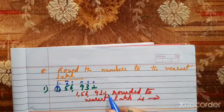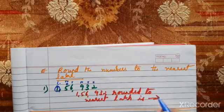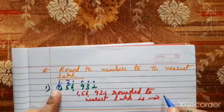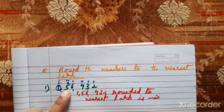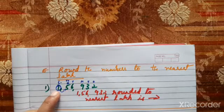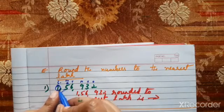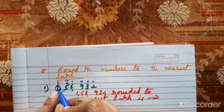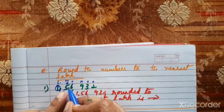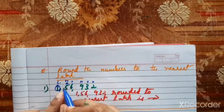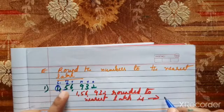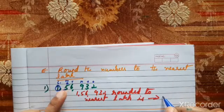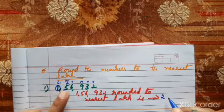1,56,932 rounded to nearest lakhs — rule is the same. We have to round off the lakhs place. Knock the door and ask: do we have 5 rupees or more than 5? We have 5, so the best friend can help. So 1 is added, meaning 1 becomes 2.